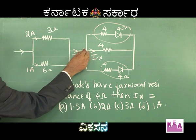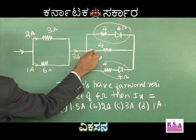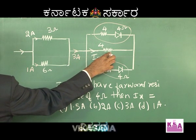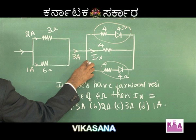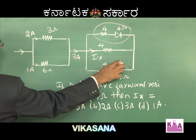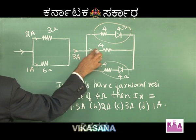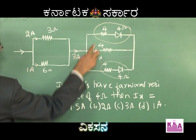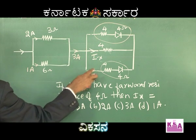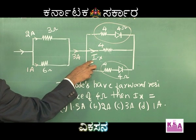Now we have a new circuit which has a 4 ohm resistance, and to this we have one more connection of 4 ohm. So this is 4 ohm and this is 4 ohm, and this combination gives us one more 4 ohm.